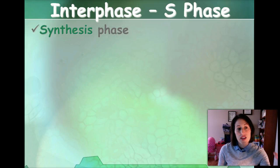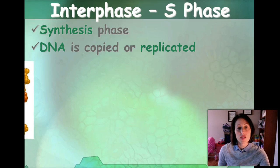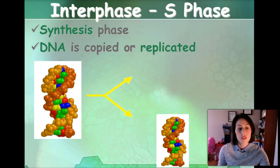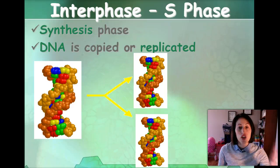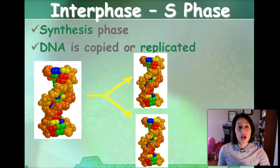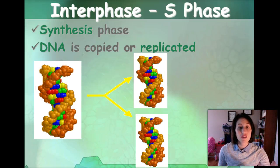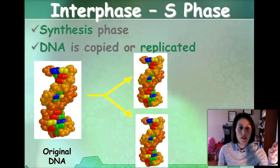S phase synthesis is where the DNA is being copied or replicated. So after S phase, it's going to have two complete, exact copies of DNA.